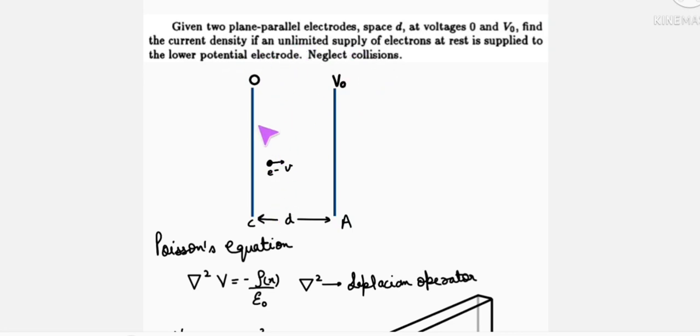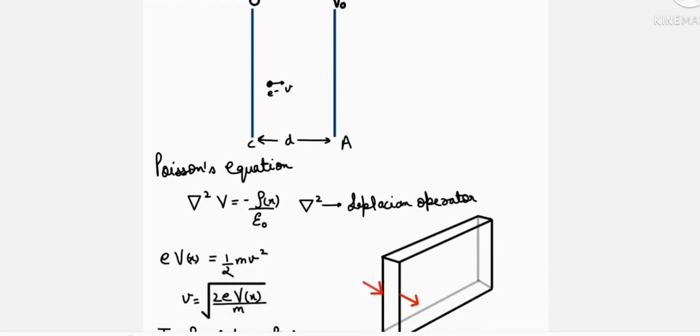The initial speed of the electrons is 0, and due to the presence of electric field, these electrons will feel an electric force and start moving. Using energy conservation, we can write E into V, where V is the electric potential at a distance X from this plate, equals half M v squared. So V will be equal to the root 2EV by M.